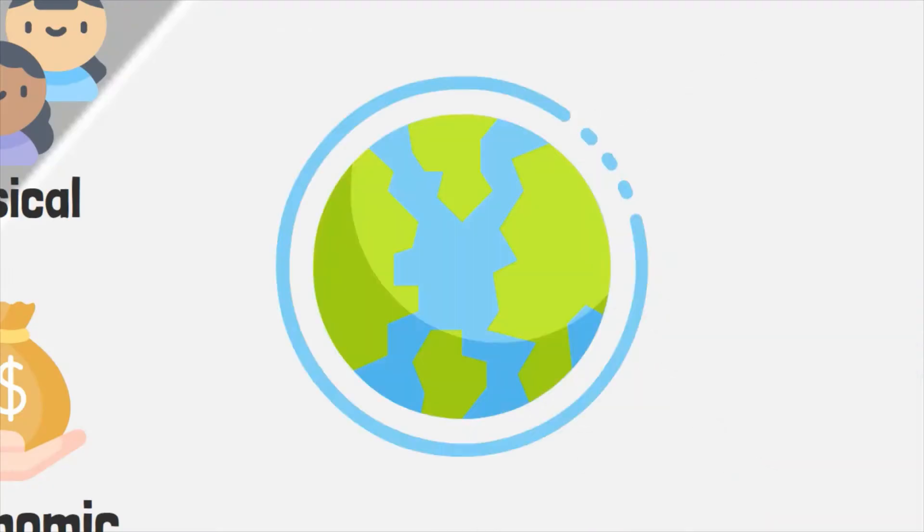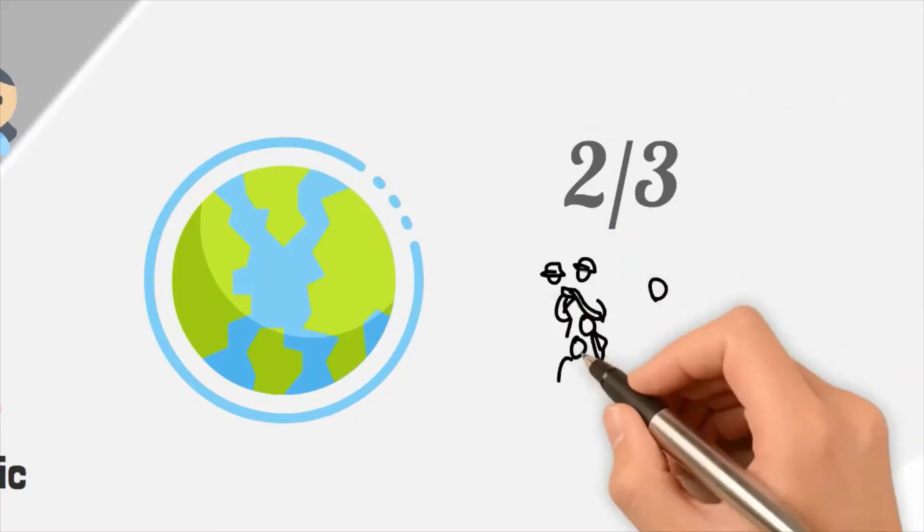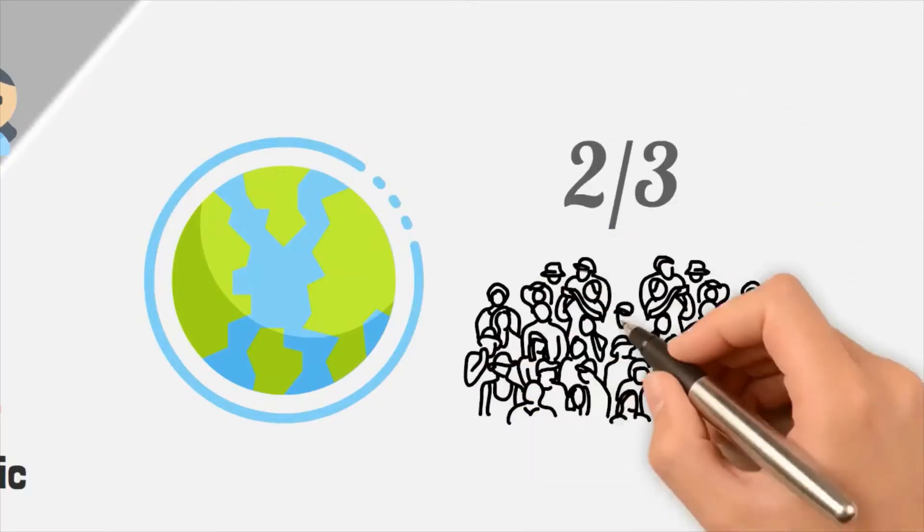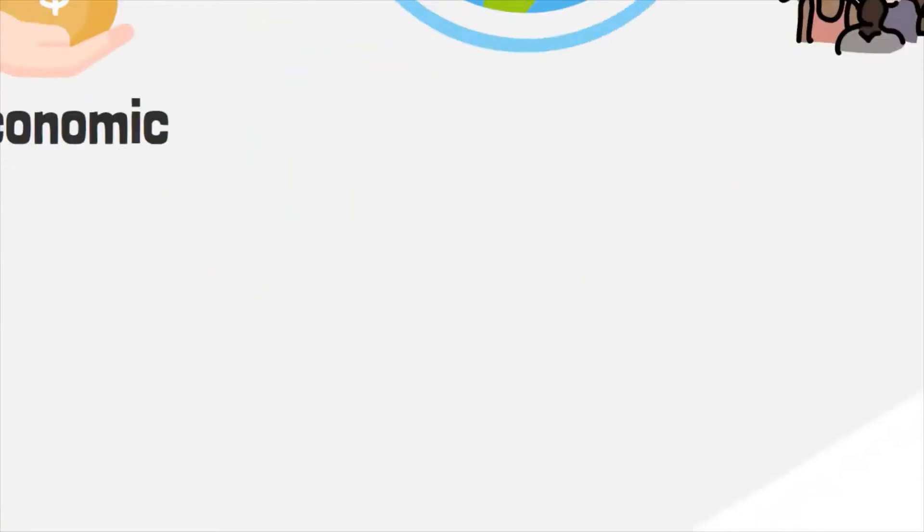Physical water scarcity can be seasonal. An estimated two-thirds of the world's population lives in areas subject to seasonal water scarcity at least one month of the year.